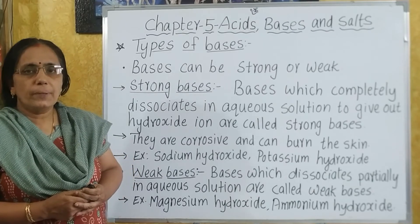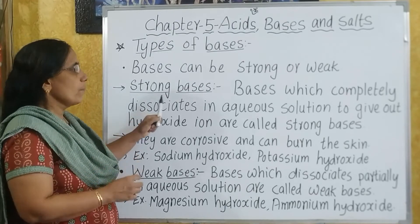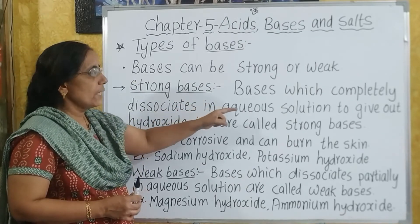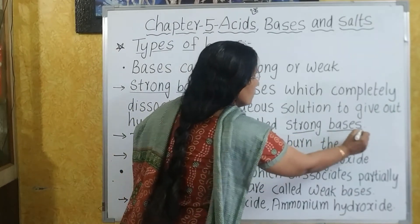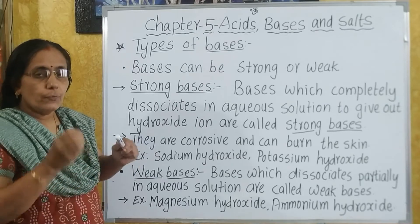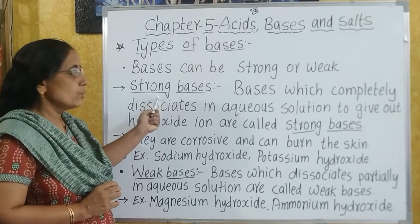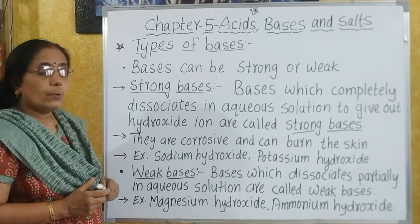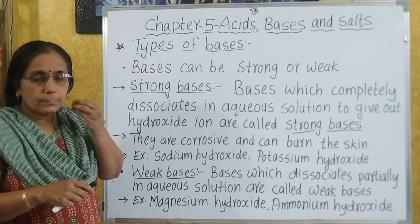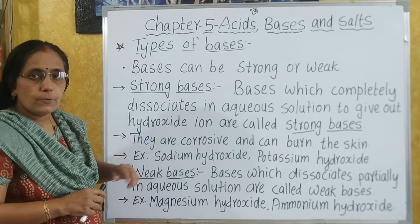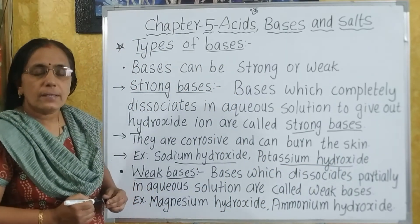Now let us see the types of bases. Just like acids, bases also can be weak or strong. First, we will see what are strong bases. Bases which completely dissociate in aqueous solution to give out hydroxide ions are called strong bases. When a basic substance is dissolved in water, if it completely dissociates to give hydroxide ions, then it is called a strong base. They are corrosive and can burn the skin. Examples of strong bases are sodium hydroxide, potassium hydroxide, calcium hydroxide, etc.